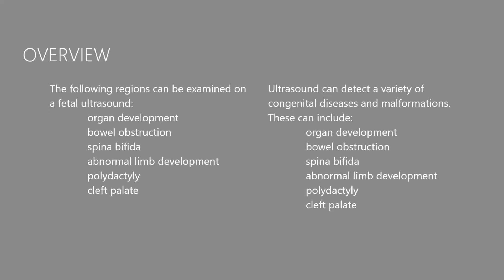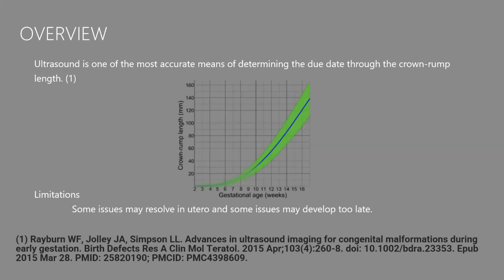We'll go through those details more quickly. One major application of obstetric ultrasound is crown-rump length measurement, which is commonly used to determine exactly how old the fetus is and estimate the expected birth date.